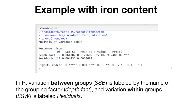Here's an example of the iron content data and an analysis of variance table — this is output directly from R. The variation between groups, or the sums of squares between groups, is labeled by the name of the grouping factor, which in the iron data is called depth.fact. Here is the sum of squares between groups and the mean square between groups.